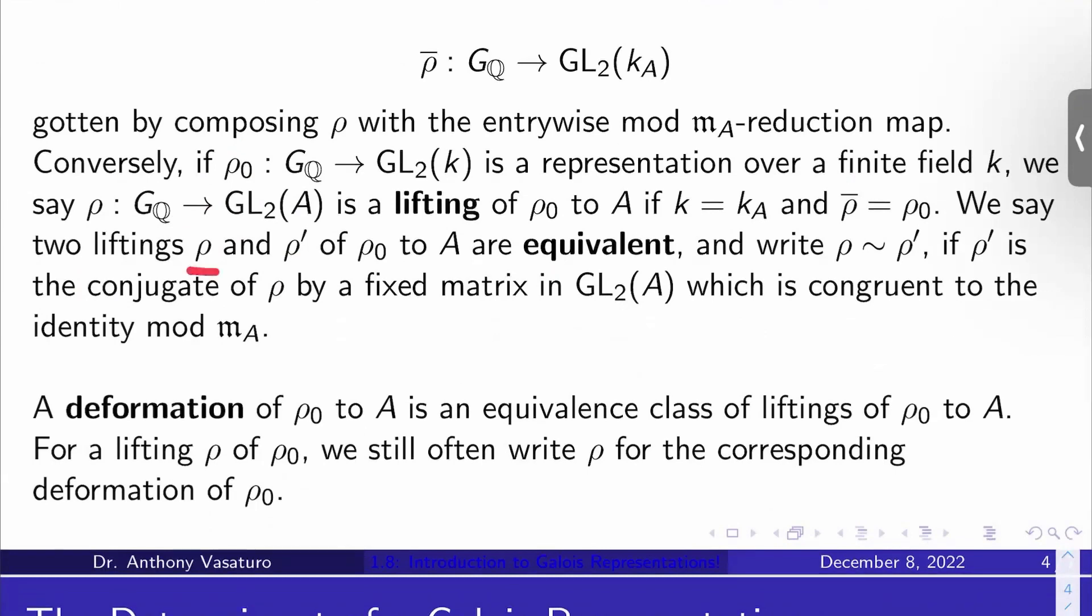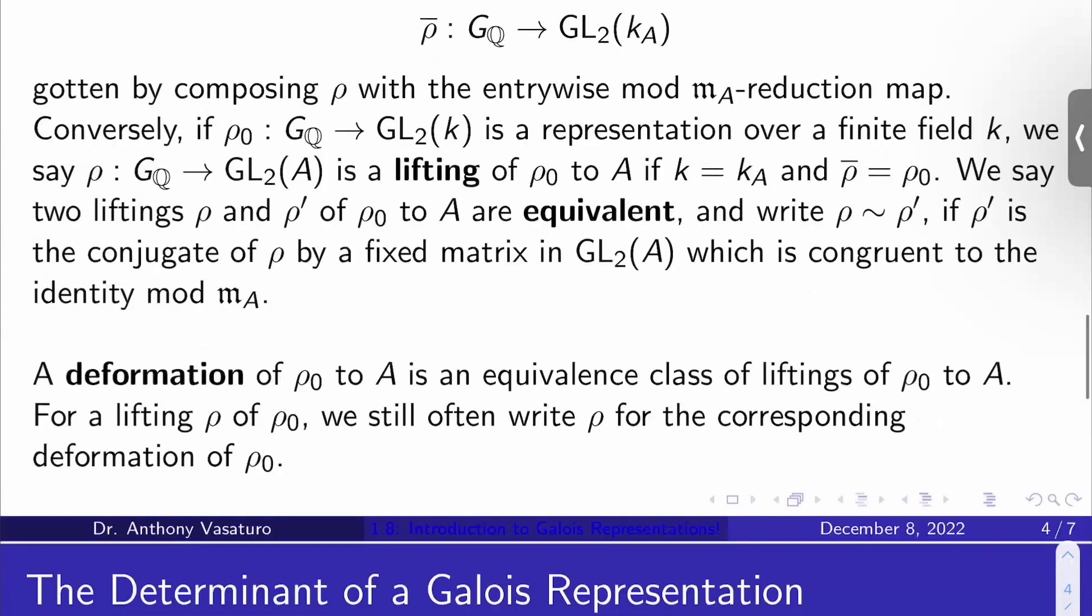And we'll say two liftings rho and rho-prime of rho_0 to A are equivalent. We'll write rho tilde rho-prime if rho-prime is just the conjugate of rho by some fixed matrix in GL_2(A), which is congruent to the identity mod m_A. So when you reduce these liftings mod m_A, the conjugation disappears basically because you just get the identity.